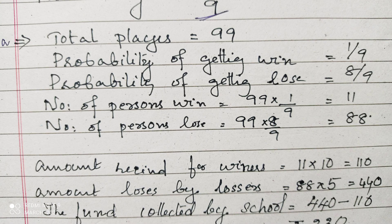Now we can find the number of persons who win. The total is 99 and the probability of winning is 1/9. Therefore, the number of persons who win is 99 × (1/9) = 11. The number of persons who lose is 99 × (8/9) = 88. According to the question, those who are winning receive 10 rupees, which the school has to pay. Therefore, 11 persons will get 10 rupees — the amount is 11 × 10 = 110.